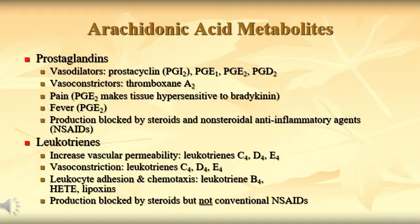Leukotrienes cause increased vascular permeability. Leukotrienes C4, D4 cause vasoconstriction. Leukotriene B4 is important for chemotaxis — it is chemotactic. Lipoxins are also important mediators in inflammation. These are all very important mediators in the inflammatory process.